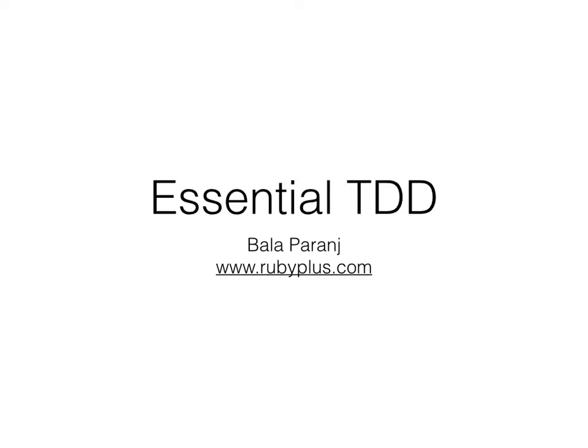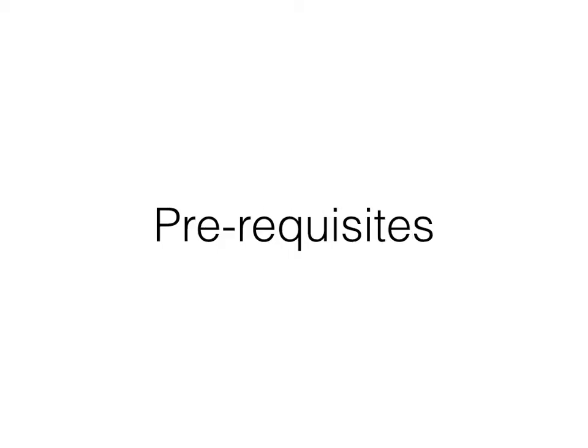Hi, welcome to the Essential TDD course. This is Bala Bharanj from rubyplus.com. The objective for this lesson is to learn about canonical test structure. You must have Ruby 2.0 or above and a text editor installed. You should have finished the previous lesson of this course.